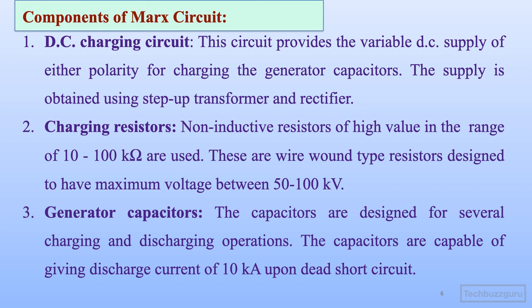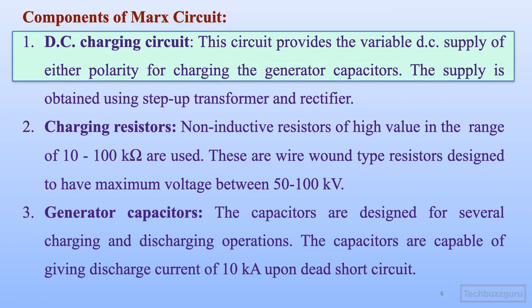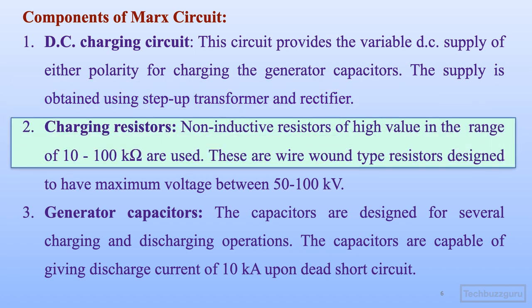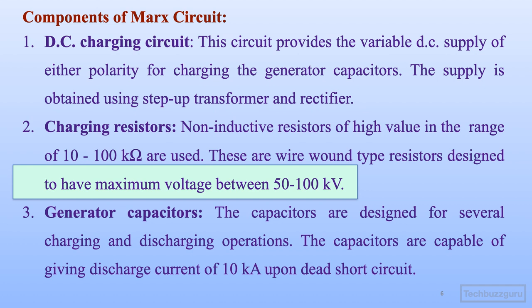Let us move ahead and check the circuit construction and various components of the Marx circuit. The first and foremost is the DC charging circuit, which is required to provide a variable DC supply of either polarity for charging the generator capacitors. The supply is obtained using a step-up transformer and a rectifier. The second element are the charging resistors — these are non-inductive resistors of high value lying in the range of 10 to 100 kilo-ohms, wire wound type, and designed to have a maximum voltage drop of 50 to 100 kV across them.